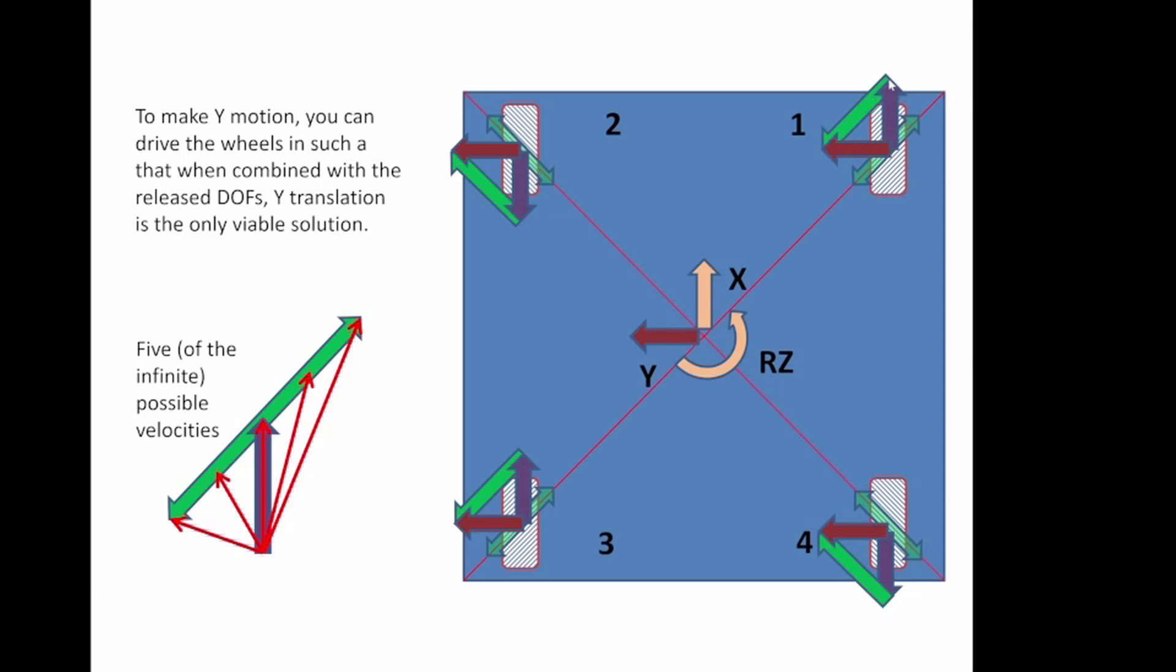the release degree of freedom allows it to go into pure Y-motion because the moving, the driven velocity is combined with the release degree of freedom, and that's a possibility. You can end up anywhere along the green arrow, but in the case, what you're doing when you drive the other wheels is you end up with a combination of things that can only be solved in a certain way. So, wheel two now drives backward, its release degree of freedom allows it to go into pure Y-motion. Wheel three, again, the release degrees of freedom and their driven directions are different, but the net result is the only solution for a rigid body is motion along the Y.